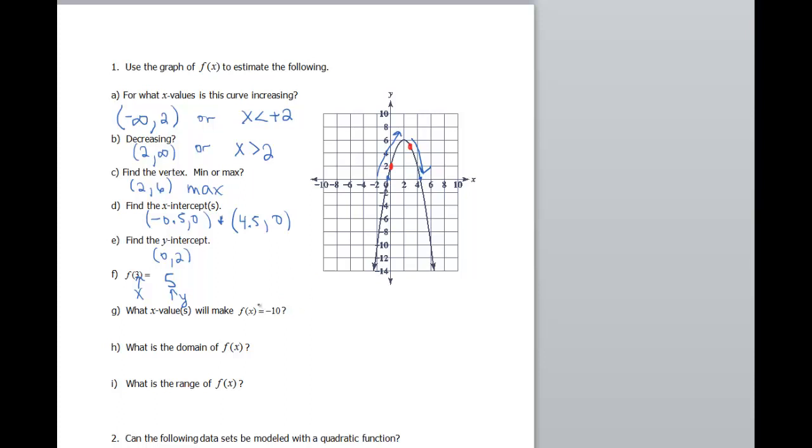What x-values will make f(x) equal to -10? So this time they're giving us the output. So that's gonna be my y-value. So I need to go down to -10. And notice that it's gonna hit my graph here, and it's also gonna hit my graph over here. So my x-values are -2, and x is also gonna equal a positive 6.